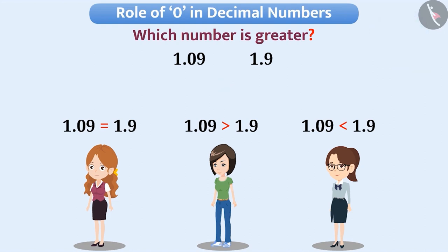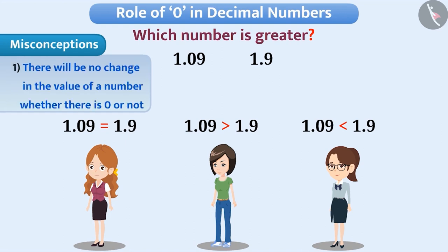Let me explain this. Nisha is having a misconception that there will be no change in the value of a number whether there is 0 or not. According to her, both numbers are the same.